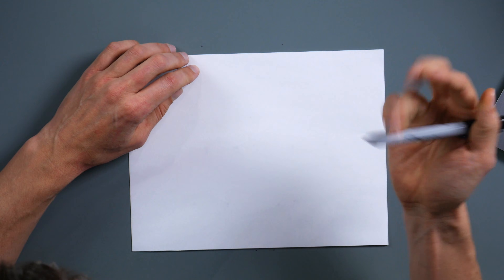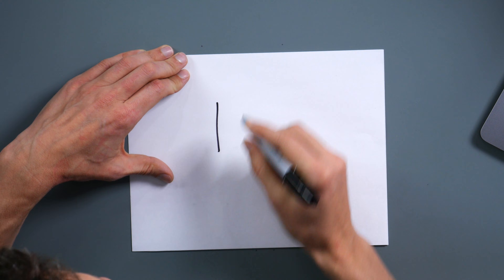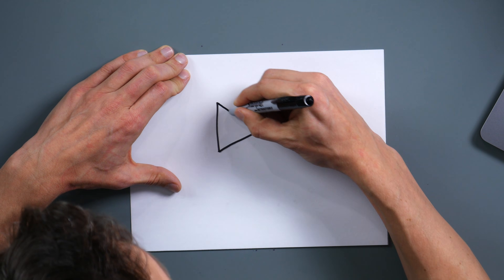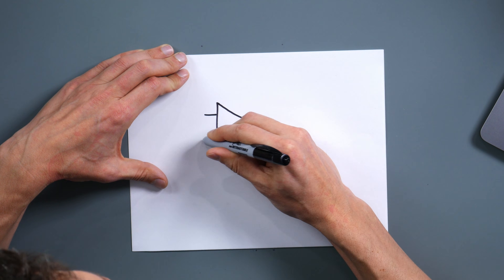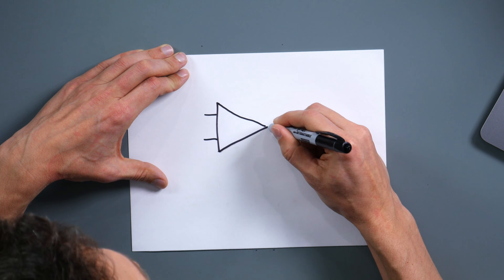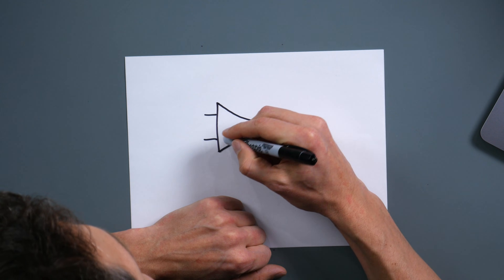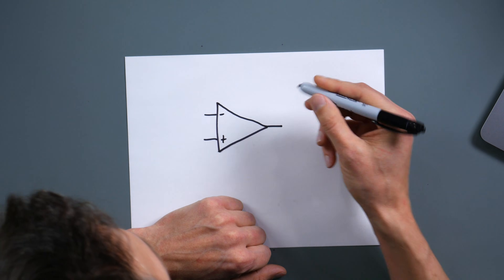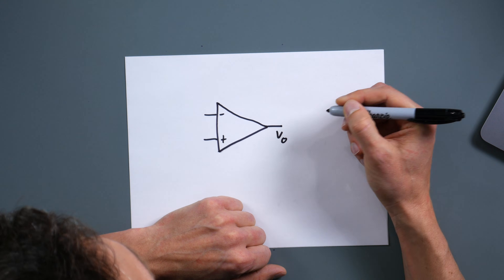Let's look at what an op amp looks like. It's basically a triangle on its side — two inputs and an output. We usually have one input marked positive and one marked negative, and then we have the output which we call V out.